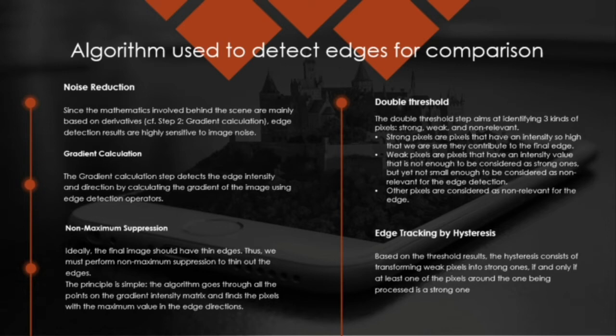The next step is double thresholding. The double threshold step involves identifying three different kinds of pixels: strong pixels, weak pixels, and non-relevant pixels. Strong pixels have very high intensity and contribute to the edges. Weak pixels have very low intensity and do not contribute to the edges. All other pixel values are called non-relevant pixels. Finally, edge tracing by hysteresis is applied. Based on the threshold values, hysteresis transforms weak pixels into strong ones so that the proper edges can be identified.